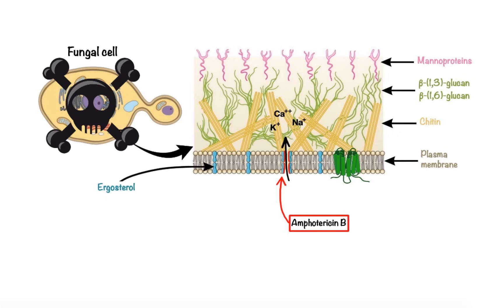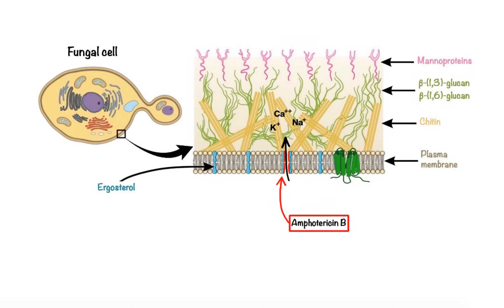Unfortunately, Amphotericin B can also bind to cholesterol molecules found in human cell membranes, although with relatively lower affinity. This has major adverse consequences because binding to cholesterol also leads to the formation of pores that increase membrane permeability, particularly in the renal vasculature and renal epithelial cells, which can ultimately lead to nephrotoxicity. Because of this, Amphotericin B is typically reserved only for treatment of severe systemic infections that require a rapid response.